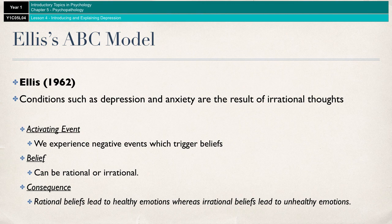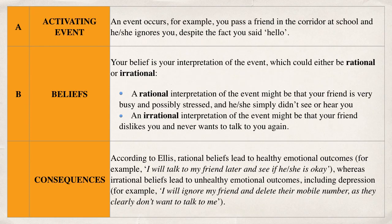On the next slide there's a little example illustrating how an activating event — a friend not greeting you in the corridor — can be rationally or irrationally interpreted. The activating event is passing a friend at school who ignores you despite you saying hello. A rational belief might be that your friend is very busy, stressed, didn't see or hear you, or was talking to somebody else — a rational, logical way of thinking. Whereas an irrational interpretation would be that your friend dislikes you and never wants to talk to you again, and ignoring you is their way of showing that.